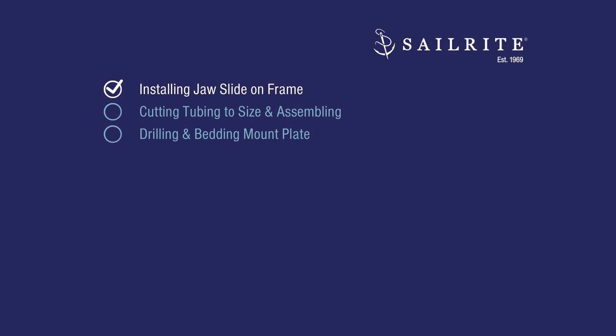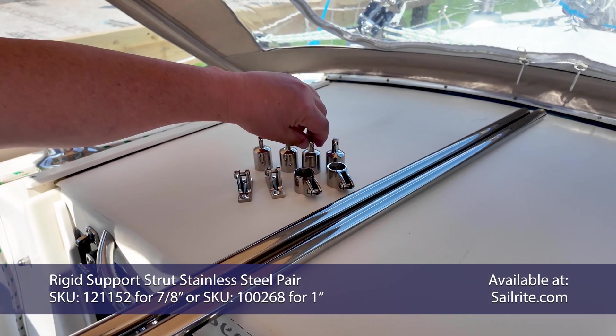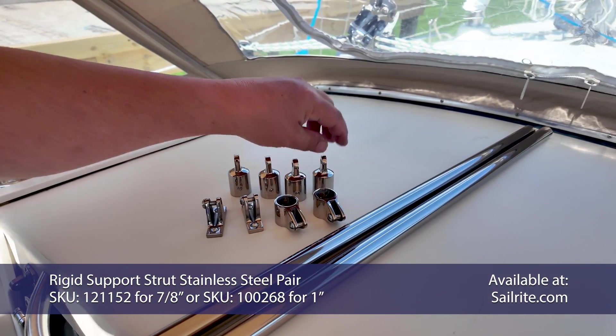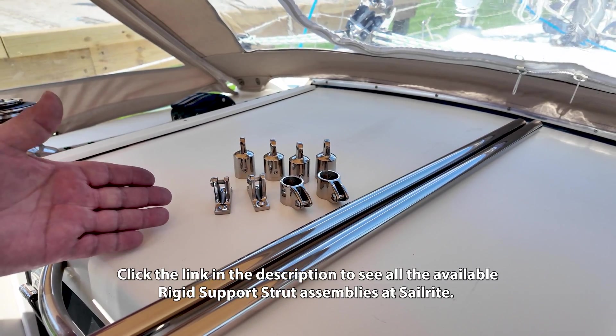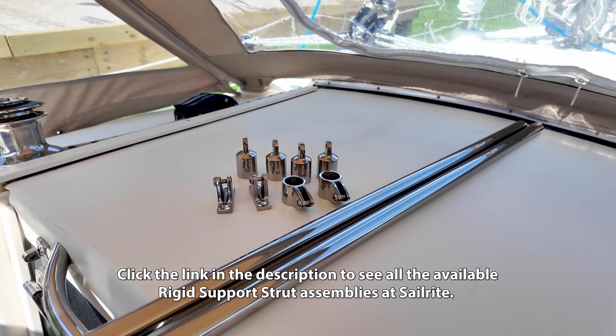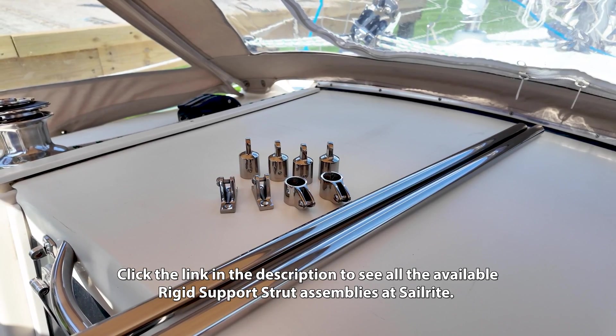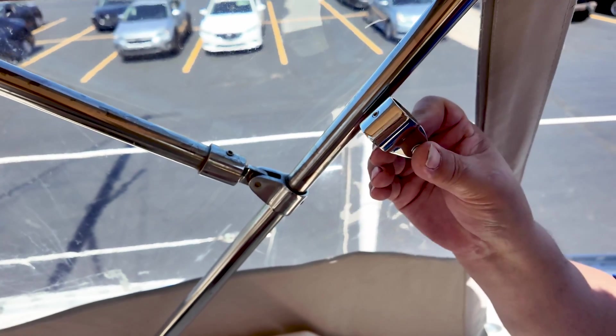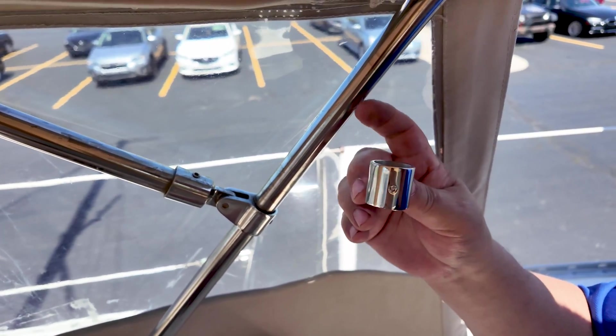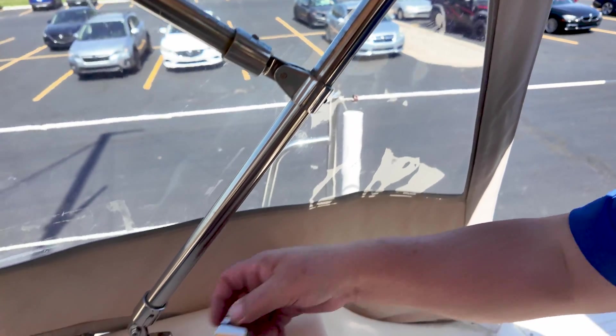We'll disassemble the frame and install the jaw slide first. This is the equipment that comes with one of our rigid support struts. In this video, we're going to show you how to install this on a boat. We're going to be installing it on a dodger, but it could be installed on a bimini as well. This jaw slide has to go on here, and we're going to put it above here. We do have rigid support struts that have jaw slides that open up so you don't have to remove this hardware.